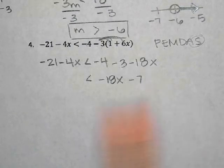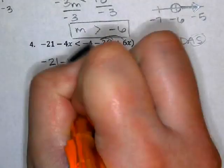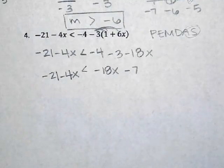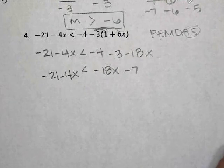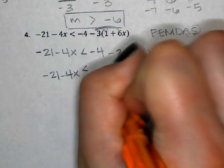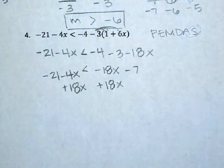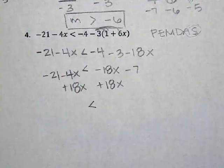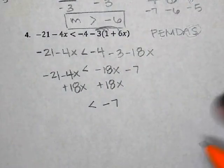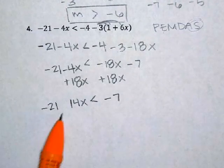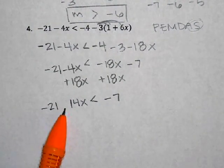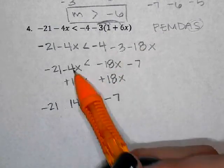Over here we have negative 21 minus 4x. After combining terms we get 14 — we had negative 4 and positive 18, so that's positive 14. We still have the negative 21.